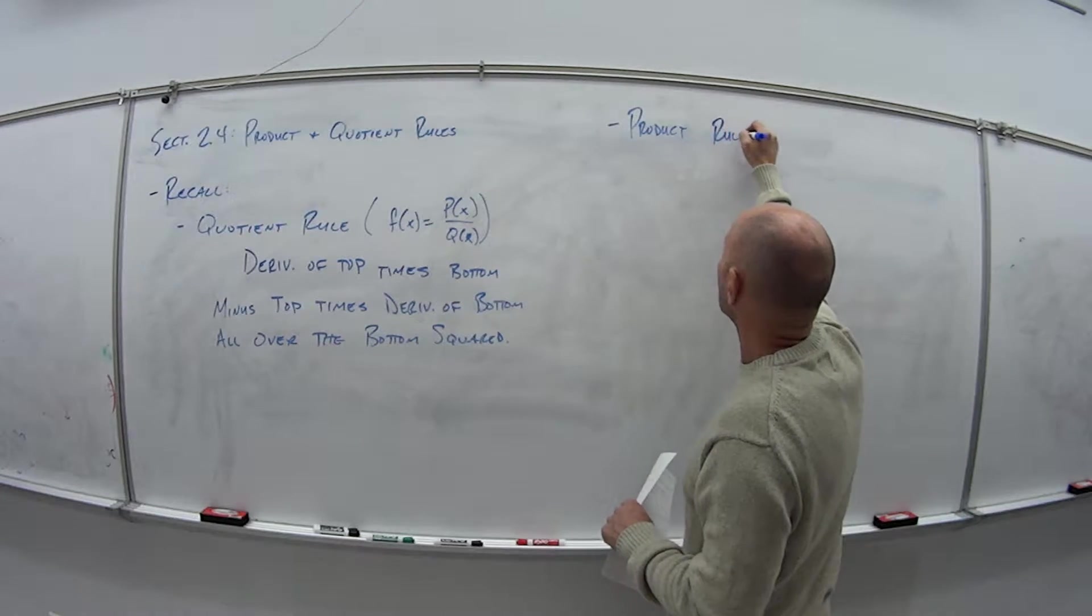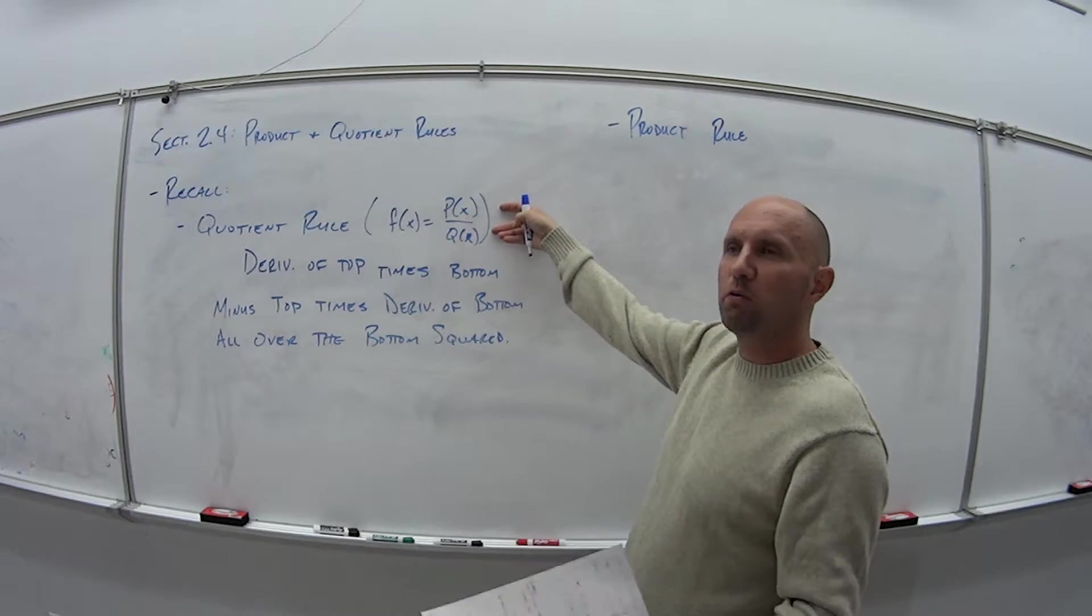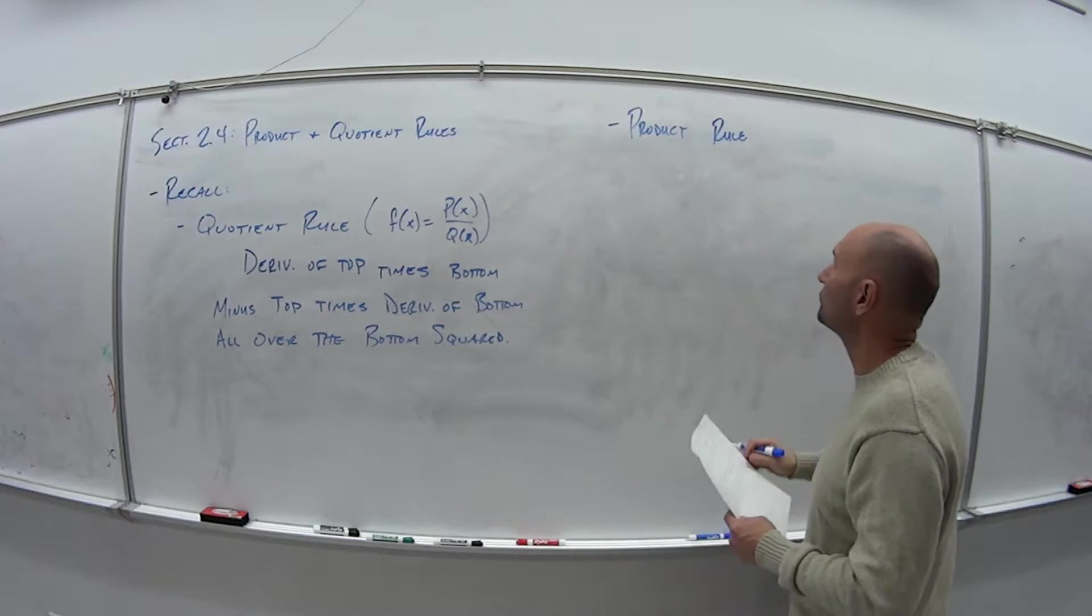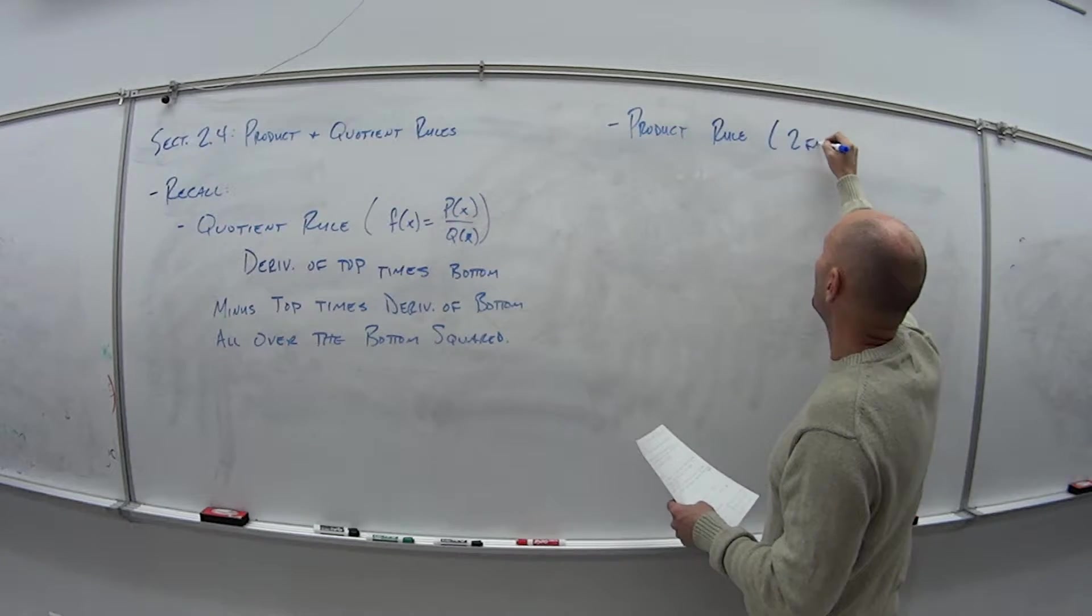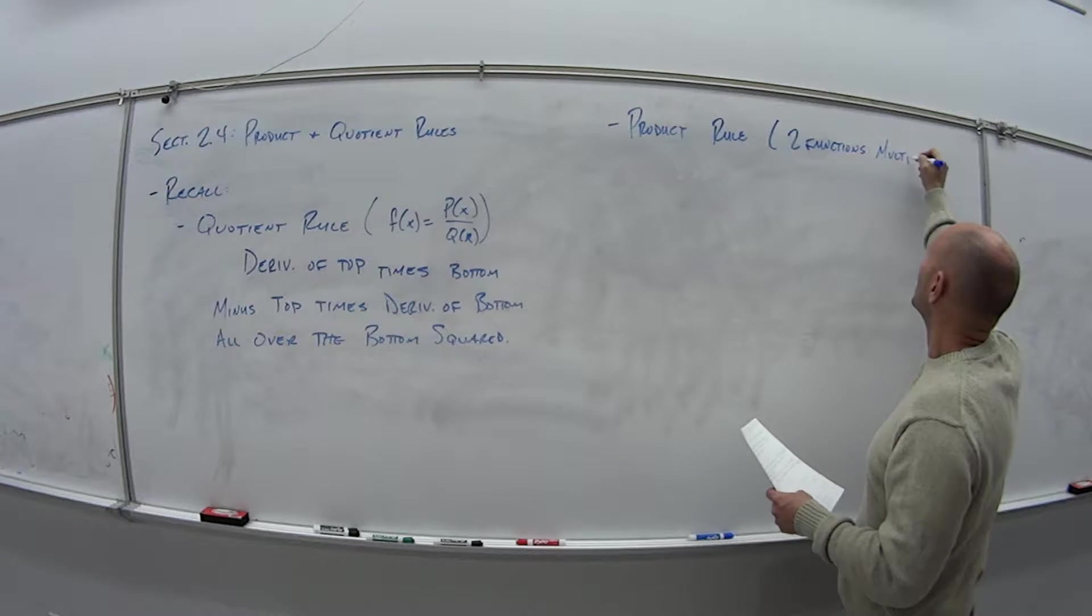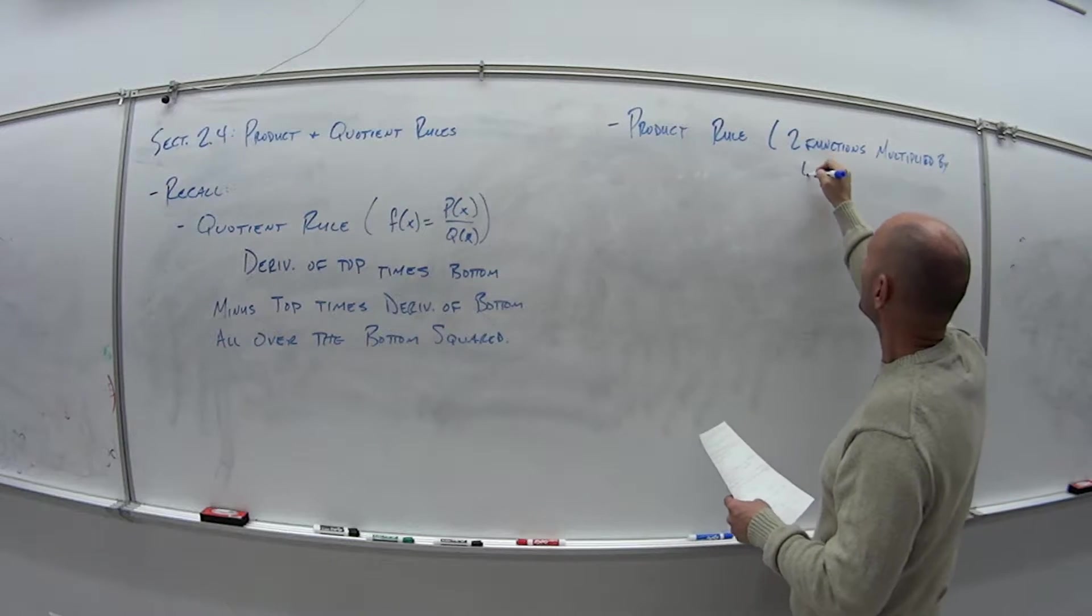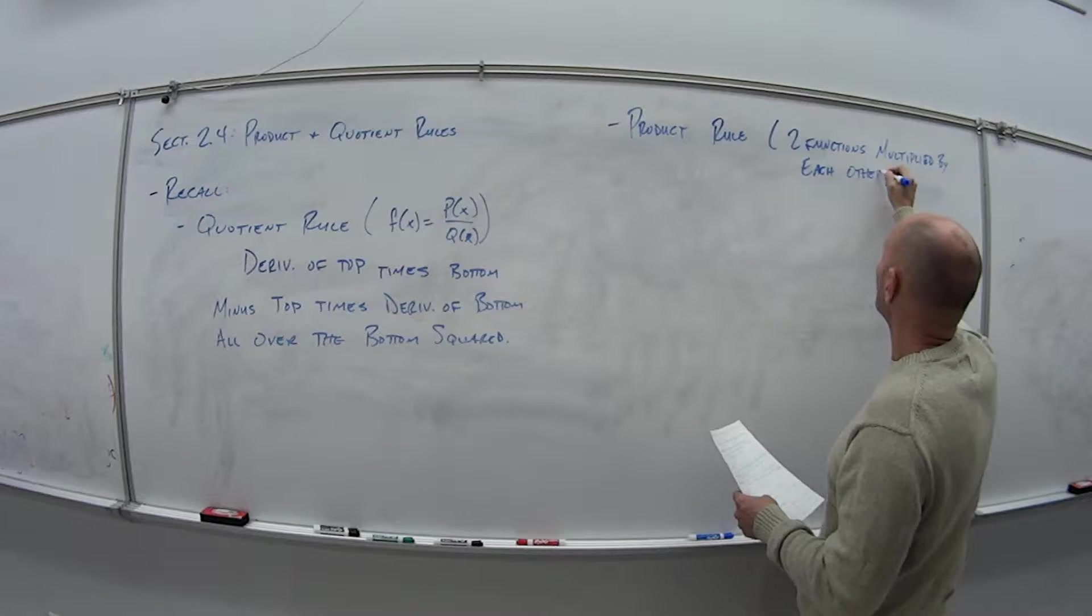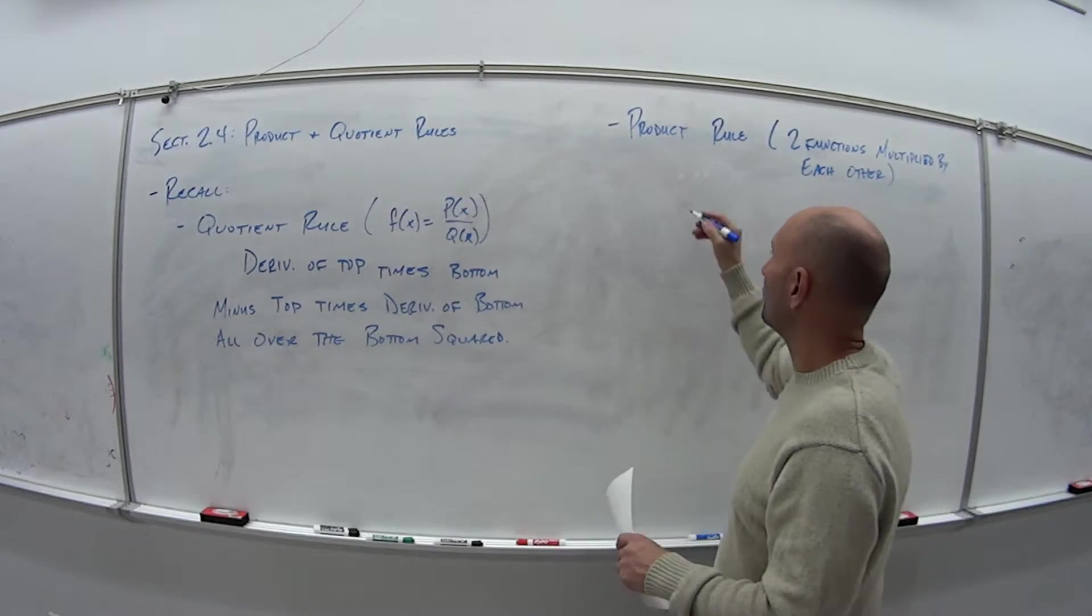Product rule, so this is what? Well this is quotient rule we use when there was a quotient. We had a division of two functions. Product rule is when we have two functions multiplied by each other. So quotient, we had a denominator. Product rule we have a product. We're multiplying.